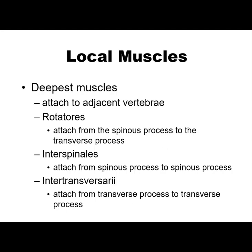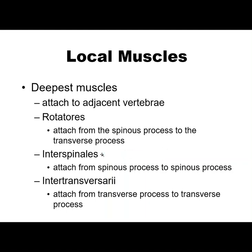The deepest local muscles attach to adjacent vertebrae and are the rotatores. They attach from one spinous process to the transverse process of another vertebra. The name is misleading — they are not your main rotators of the spine; they probably sense rotational motion, acting more like a muscle spindle. Then you have the interspinalis, attached from spinous process to spinous process, which monitors flexion. And the intertransversarii, attached from transverse process to transverse process, monitoring lateral flexion or lateral bend. So you have one deep muscle that monitors rotation, one flexion, and one lateral bend.